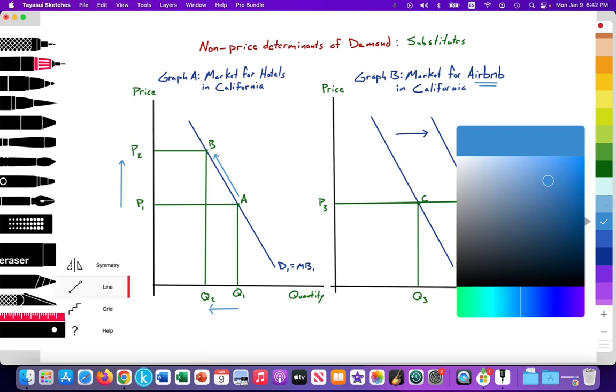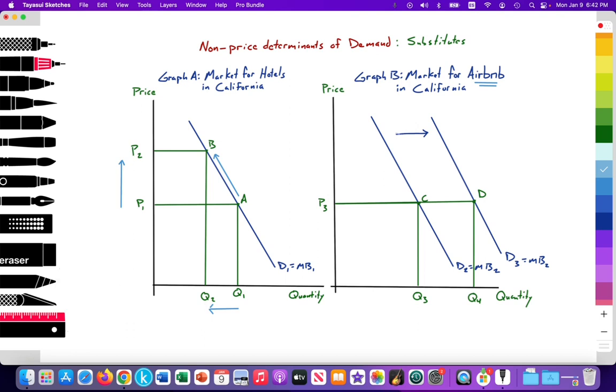So this is a non-price determinant. As a result of the increase in price of hotels, there's an increase in demand for the cheaper alternative of Airbnb. With substitutes, we see that if the price of one good rises, that causes the demand for the substitute good to increase and vice versa. If hotels were to fall, the demand for Airbnb would fall because hotels provide maybe more luxury than an Airbnb unit, generally speaking. That's the rule with substitutes or the non-price determinant of demand for substitutes.